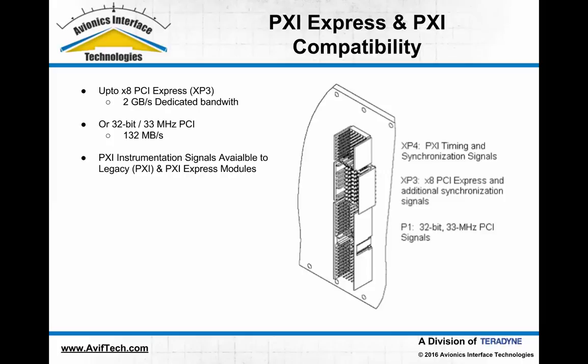Looking at the signals in those connectors: the XP4 at the top is where all instrumentation signals are connected. In the middle, the P3 provides up to 8 lanes of PCI Express per hybrid slot, delivering up to 2 gigabytes per second of dedicated bandwidth between the controller and that slot — not shared with other modules as it would be in a PCI system. Then P1 carries the legacy 32-bit, 33 megahertz PCI signal with 132 megabytes per second of shared bandwidth.